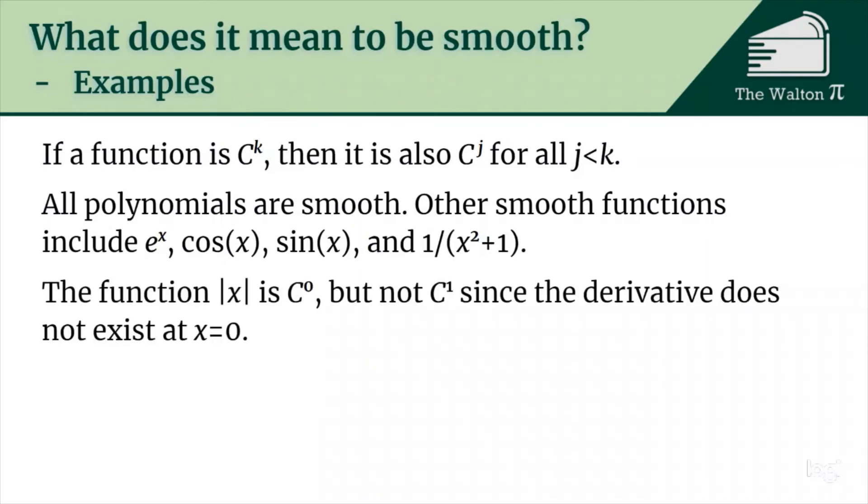The function absolute value of x, that's C0, but it's not C1 since the derivative does not exist at x equals 0. So there's an example to show that C0 is not the same thing as C1.